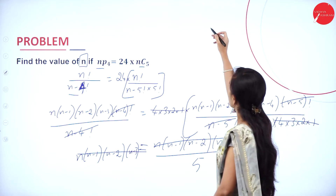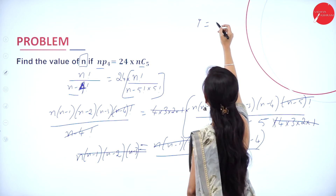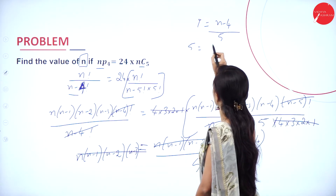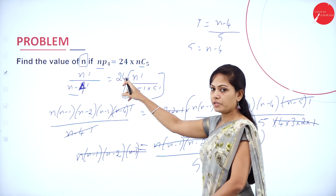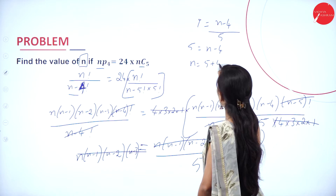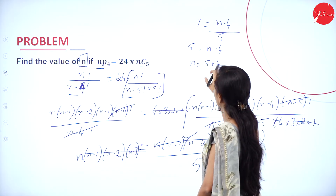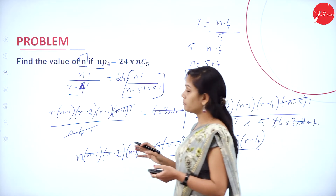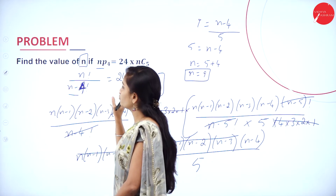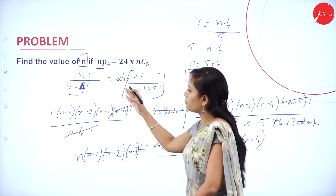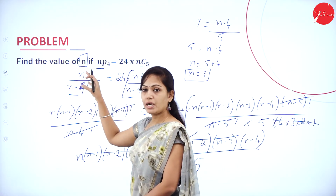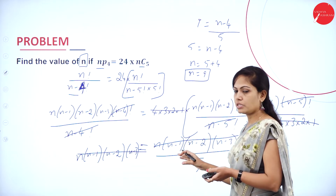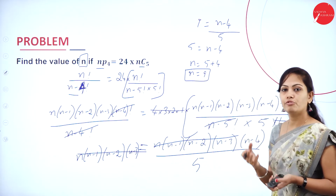After cancellation, we get 1 = (N−4) / 5. Cross-multiplying: 5 = N−4, so N = 5 + 4 = 9. The value of N is 9. To find N or R, simply apply the NPR or NCR formula properly and cancel the terms.